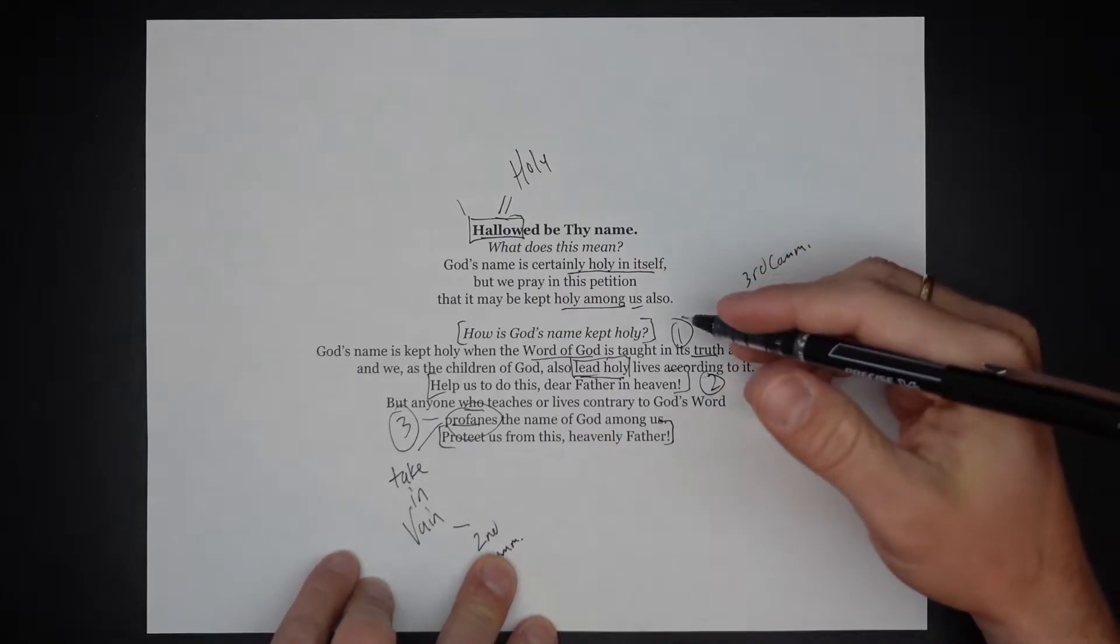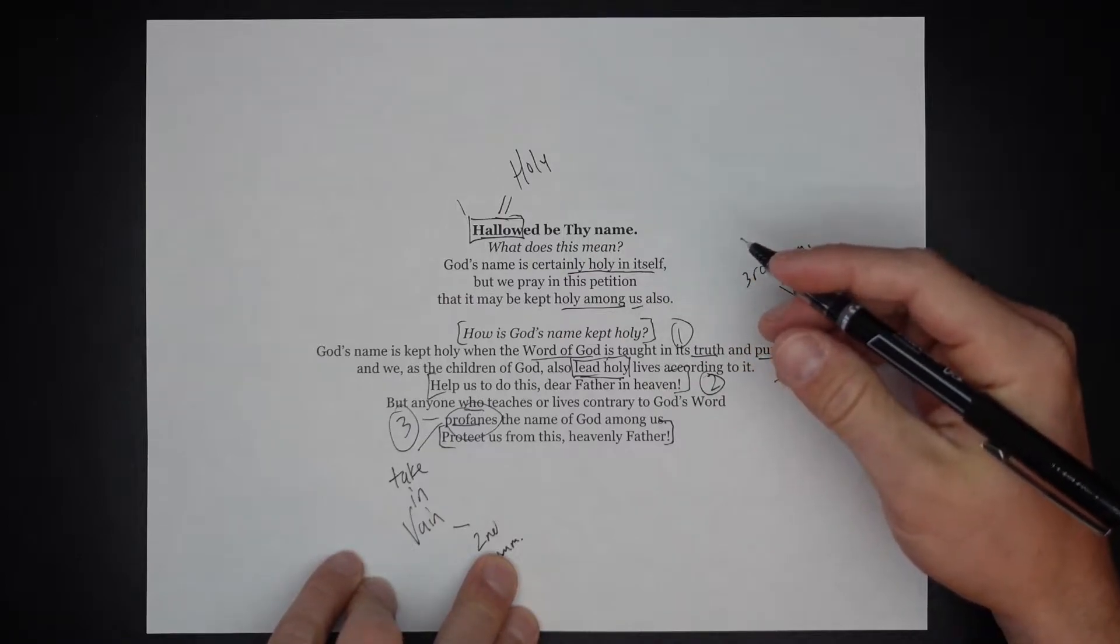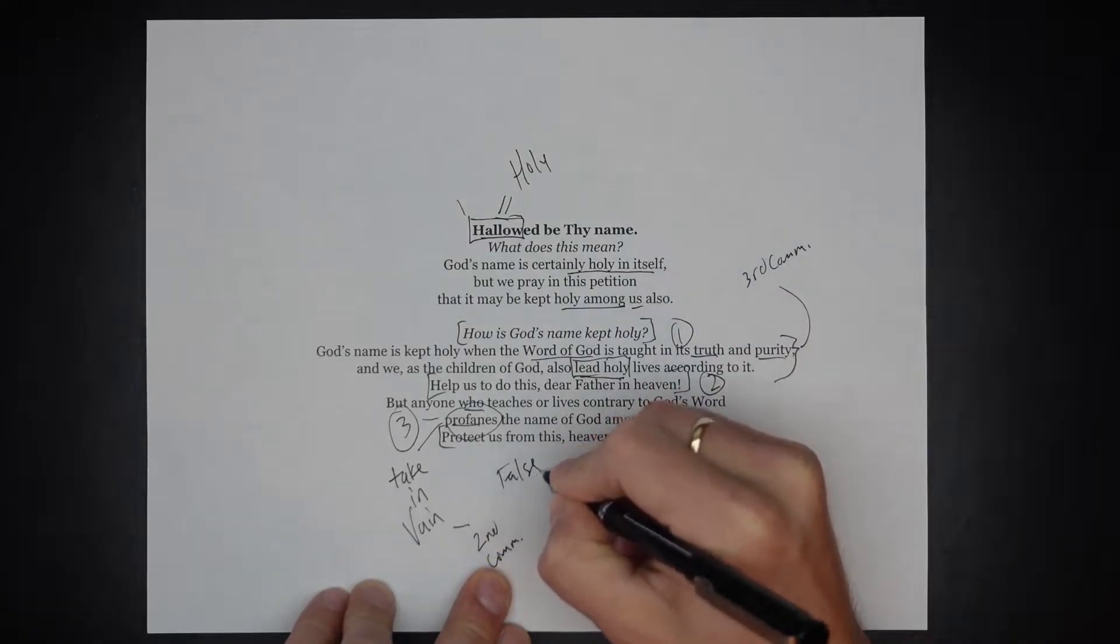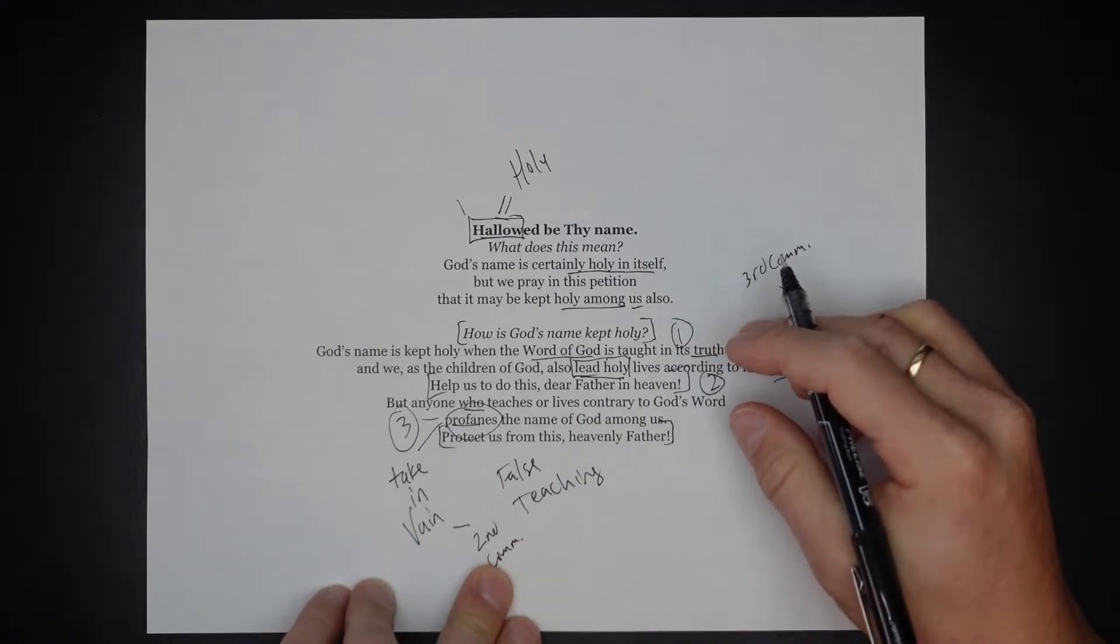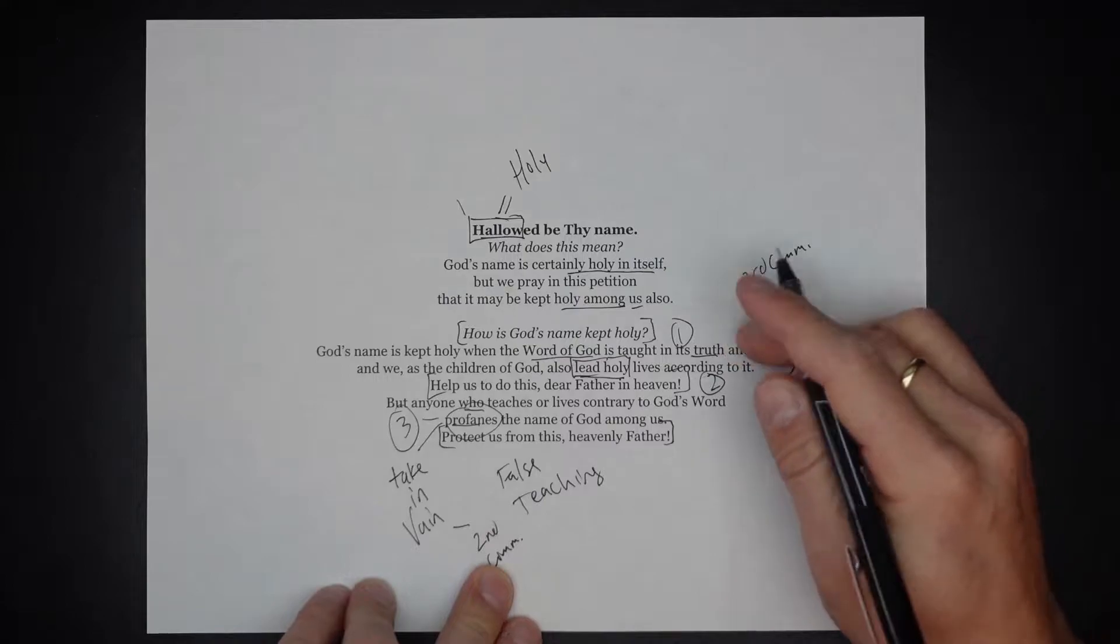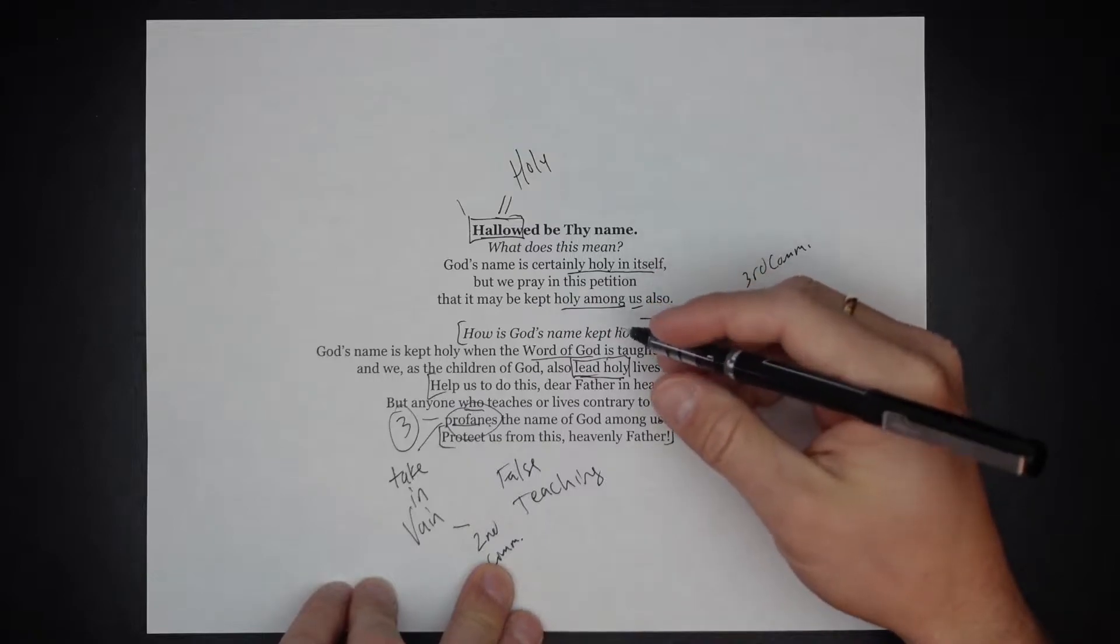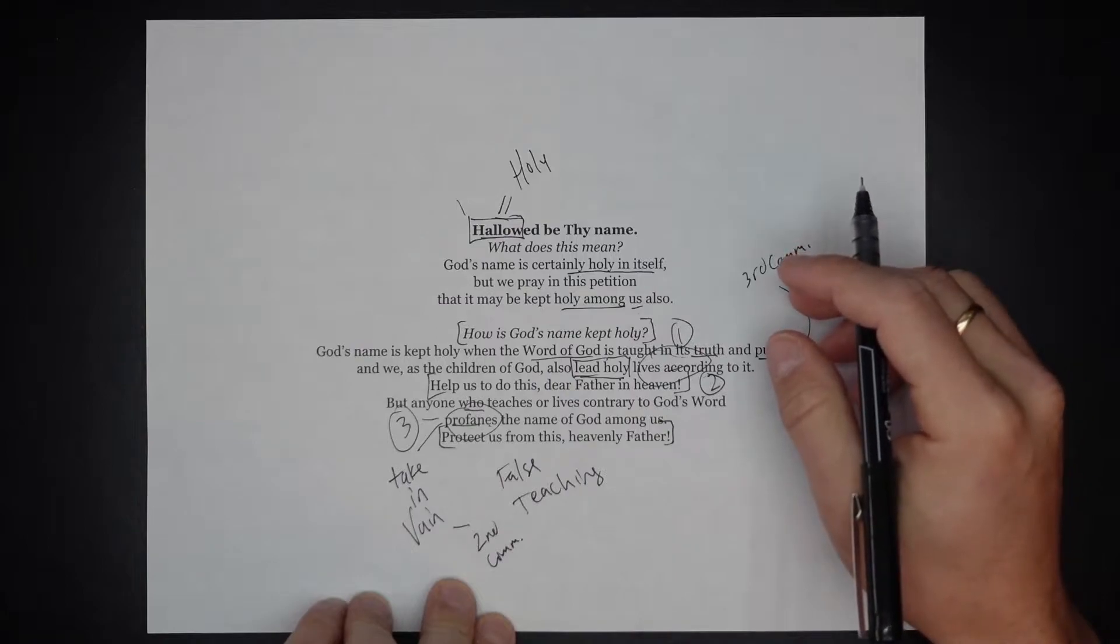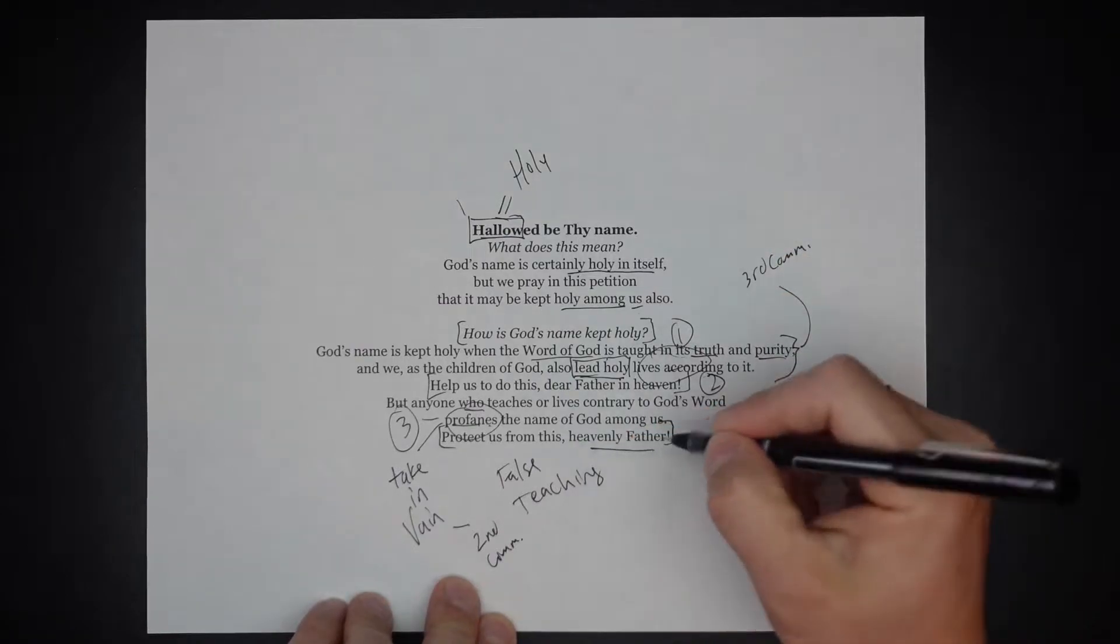Help us teach faithfully God's word and live holy lives according to it, dear Father in heaven. And protect us from the profanity of others, like false teachers, false prophets, who would profane the name of God by saying things that he has not said. But we also pray that it would be protected from us, from you and me, who would profane this name with our sins, who would sin against the commandments, not live holy lives according to it. This is to not keep the Lord's name holy. So we pray protect us from this dear heavenly Father.